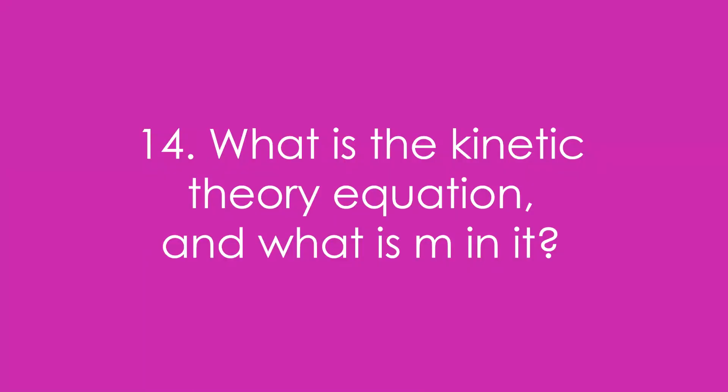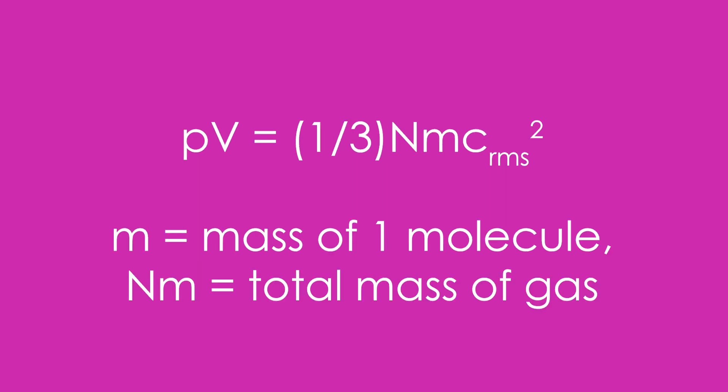Question 14: What is the kinetic theory equation, and what is m in it? It's PV = ⅓NMc²_RMS. M is the mass of one molecule, not the total mass of the gas. NM is the total mass of the gas.